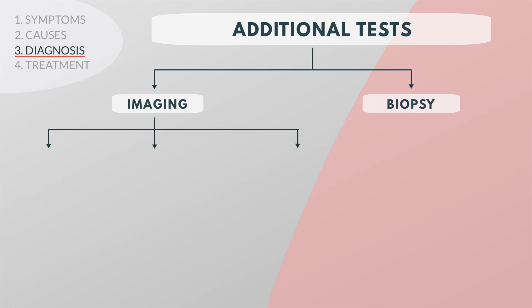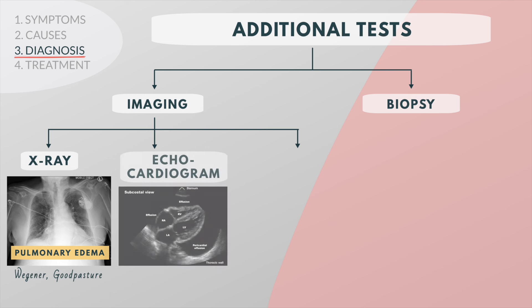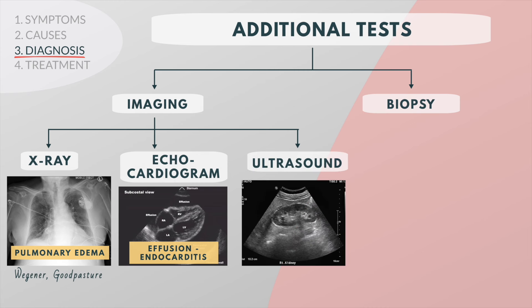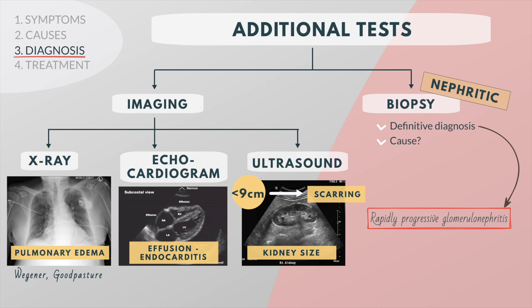Additional useful tests depend on the patient's history and physical examination. A chest x-ray may demonstrate pulmonary edema or findings suggestive of Wegener's granulomatosis or Goodpasture's disease. An echocardiogram may identify pericardial effusion or endocarditis. A renal ultrasound is frequently obtained in cases of decreased GFR to evaluate kidney size; a kidney size of less than 9 cm may suggest extensive renal scarring with a low likelihood of reversibility. A renal biopsy is often used in nephrotic syndrome for definitive diagnosis and is helpful in distinguishing between primary and secondary causes. It can also allow rapid diagnosis in rapidly progressive glomerulonephritis, and can yield information regarding the level of inflammation, the extent of fibrosis, and the overall prognosis.